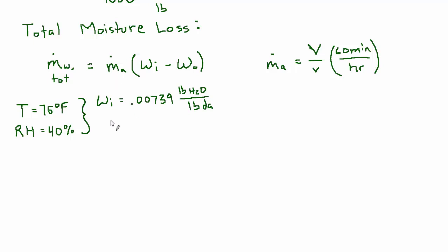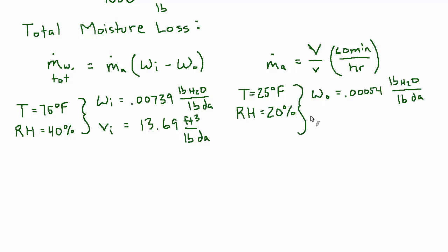And the specific volume for those inside conditions is 13.69 cubic feet per pound of dry air. Okay, now outside the temperature's 25 degrees and the humidity is 20%. And the humidity ratio is 0.00054 and the specific volume is 12.28.